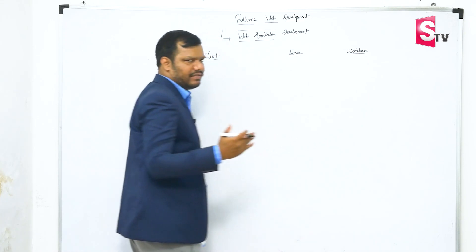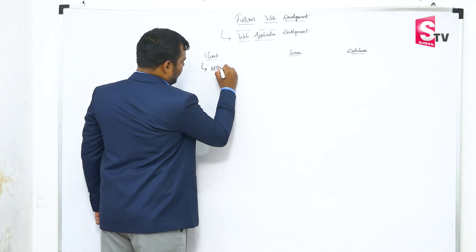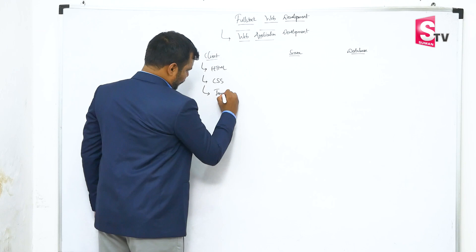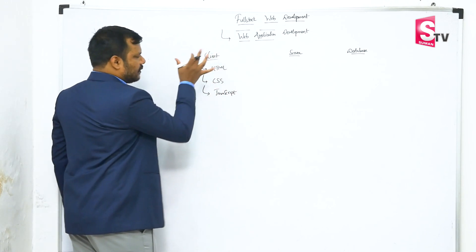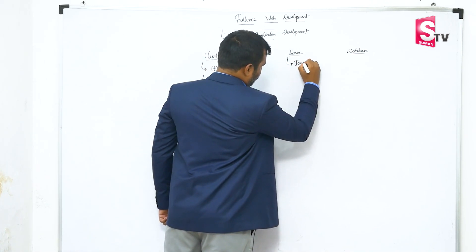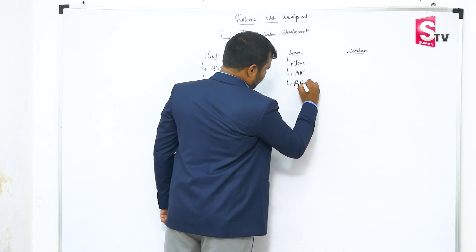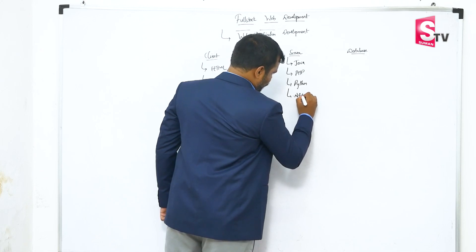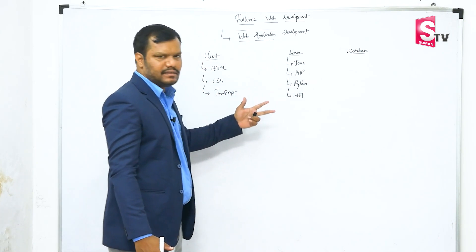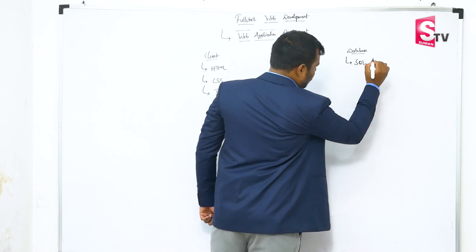These different components use different languages. The client-side executed languages are HTML, CSS, and JavaScript. These three languages are client-side executed. Server-side languages include Java, PHP, Python, and .NET — these are multiple technologies, and I have listed only a few; there are many. These are the major server-side languages. On the database side, there is only one language, which is SQL.